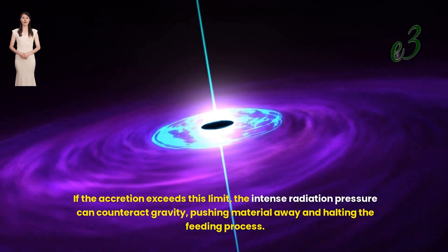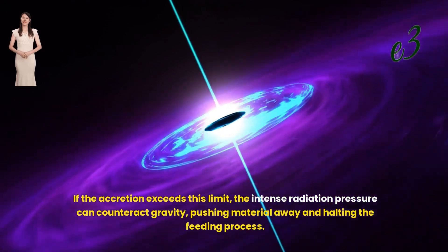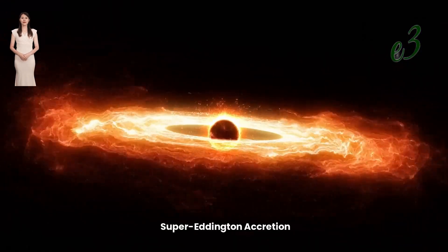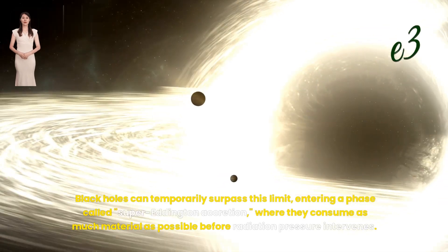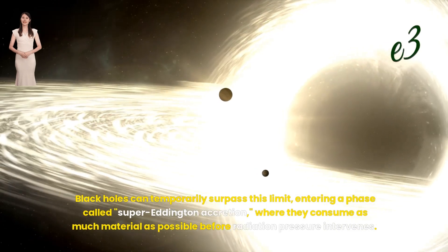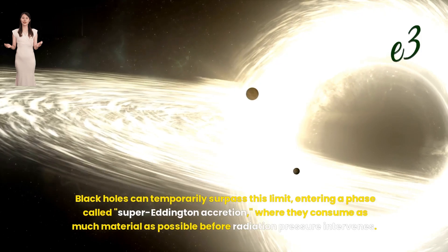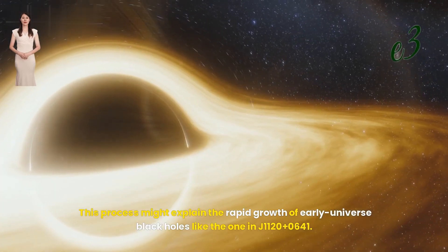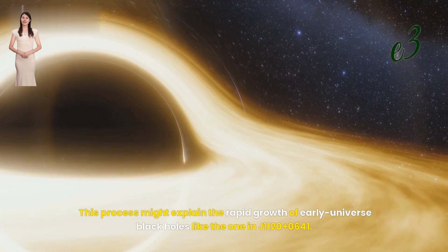Super Eddington accretion. Black holes can temporarily surpass this limit, entering a phase called super Eddington accretion, where they consume as much material as possible before radiation pressure intervenes. This process might explain the rapid growth of early universe black holes like the one in J1120+0641.